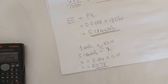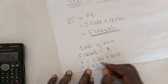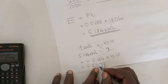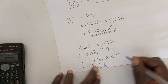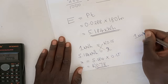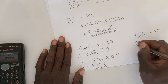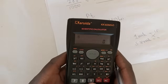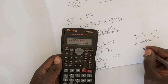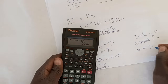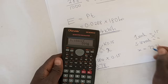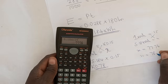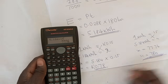So the cost of using resistor R for six hours per day for 30 days, at 15 ngwee per kilowatt hour, is 78 ngwee or 0.78 kwacha. Alternatively, using 5.184 × 15 = 77.76, rounded to 78 ngwee — the same answer either way, and both approaches are accepted as correct.